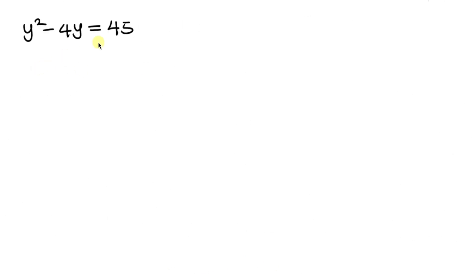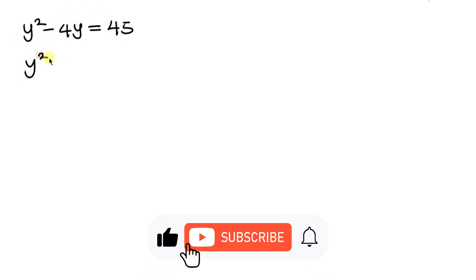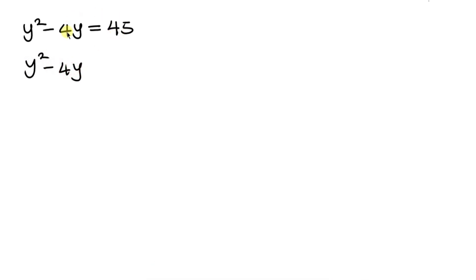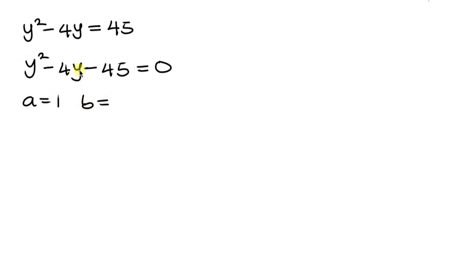This is a quadratic equation that we're going to be solving. We move 45 to the left-hand side, so that we have y squared minus 4y minus 45 equal to 0. We're going to use the quadratic formula. Our a is the coefficient of y squared, which is 1. Our b is the coefficient of y, which is negative 4. And our c is the constant term, which is negative 45.